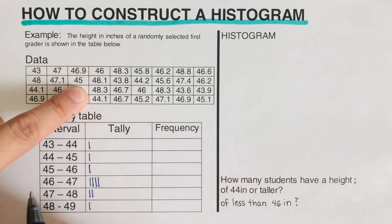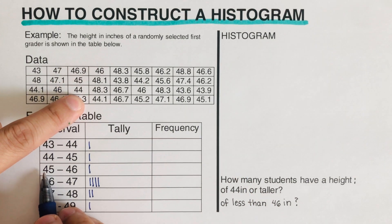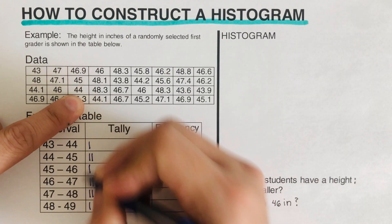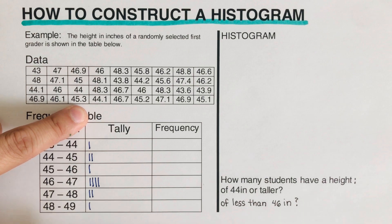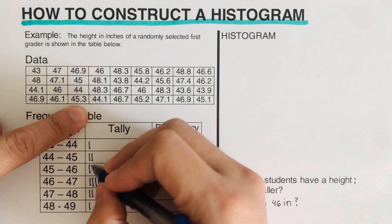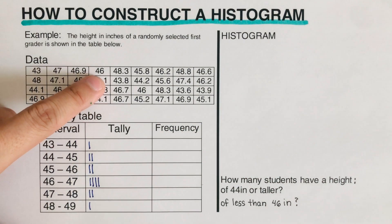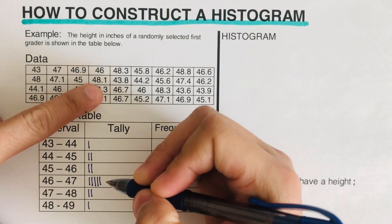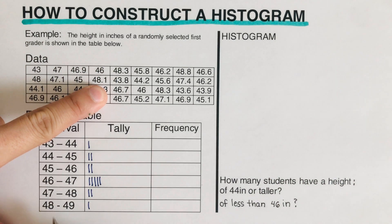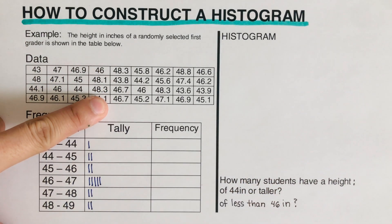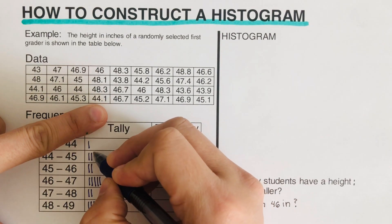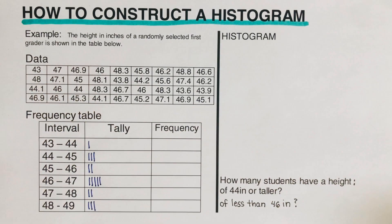46.1 and 46.9 both belong to the 46–47 interval. Solid 45 belongs to the 45–46 interval. Solid 44 belongs to the 44–45 interval. 45.3 belongs to the 45–46 interval. Solid 46 belongs to 46–47. 48.1 and 48.3 belong to 48–49. 44.1 belongs to 44–45. Let's tally all the remaining values now.